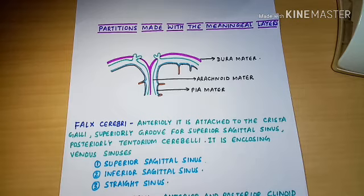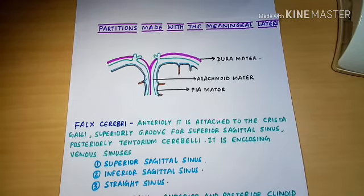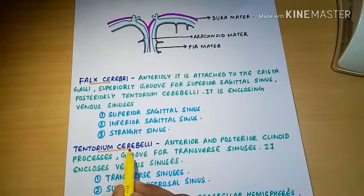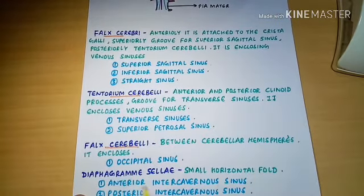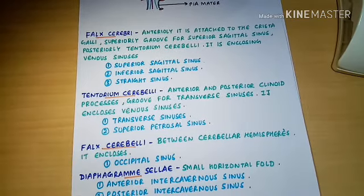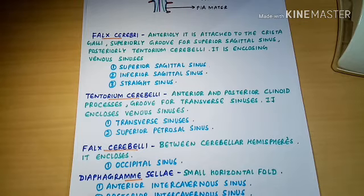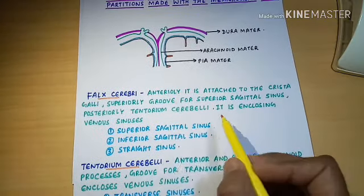The five types of dural partitions are: the falx cerebri, tentorium cerebelli, falx cerebelli, diaphragma sellae, and the anterior dural girdle. The falx cerebri is anteriorly attached to the crista galli, superiorly grooved for the superior sagittal sinus, and posteriorly connected to the tentorium cerebelli, enclosing the venous sinus.